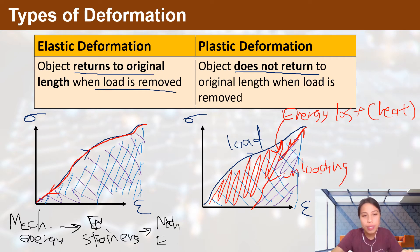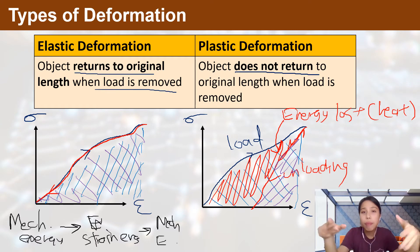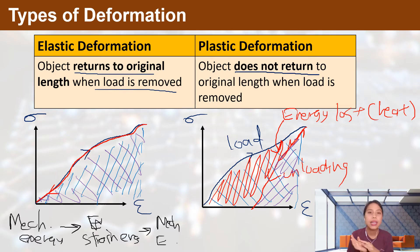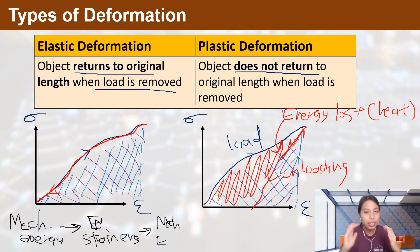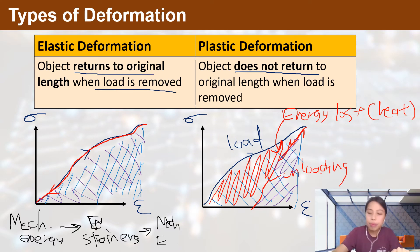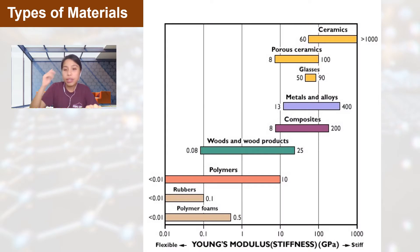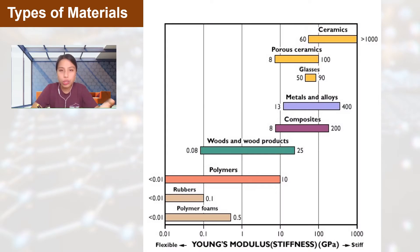The next bit is kind of the extra part. You will see this in older past-year questions because it was in the syllabus, but the new syllabus didn't state all those details, so there's a chance they may come out but probably won't be a big hassle. Just so you know, there are different types of materials with a whole range of Young's modulus values.